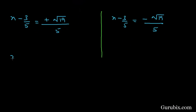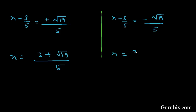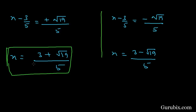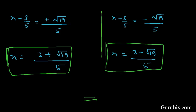From the first condition, x equals 3/5 plus √19/5. From the second condition, x equals 3/5 minus √19/5. So these are the two roots of the given quadratic equation. Thank you.